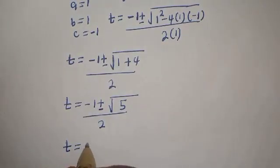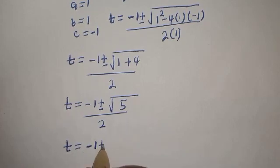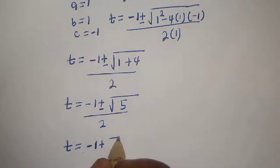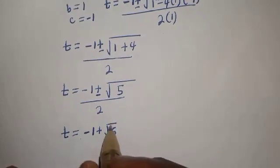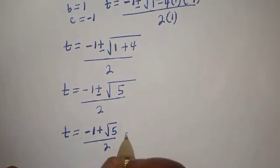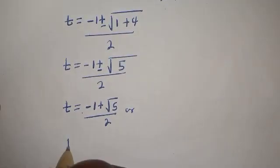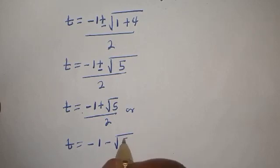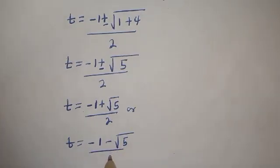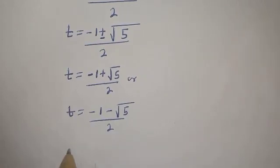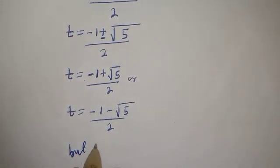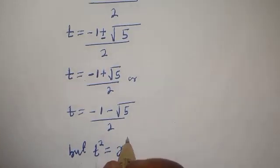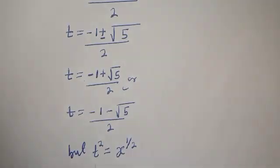Therefore, t is equal to minus 1 plus root 5 over 2, or t is equal to minus 1 minus root 5 over 2. Since t squared equals x raised to the power 1 over 2, let's work with the positive root.